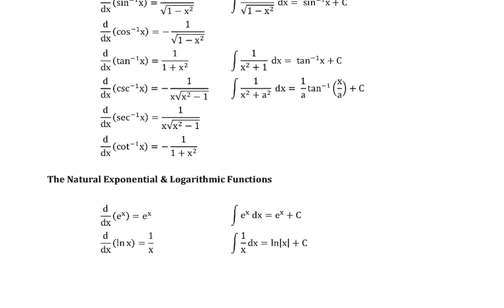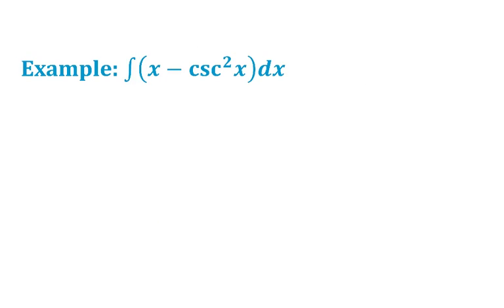For exponential and log functions: the derivative of e to the x is e to the x, so integrating e to the x gives back e to the x. The derivative of natural log is 1 over x, so integrating 1 over x gives back the natural log. Notice the absolute value bars — the domain of a log curve is all x greater than zero, which is why those appear.